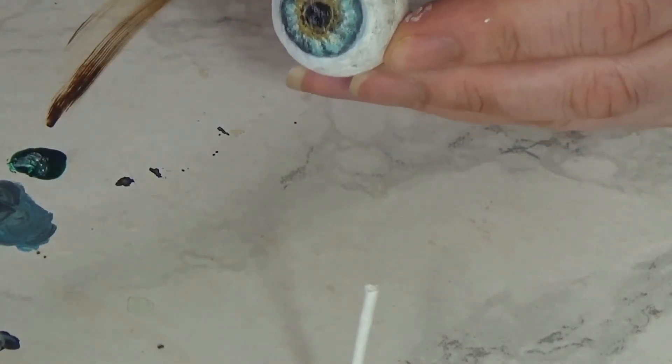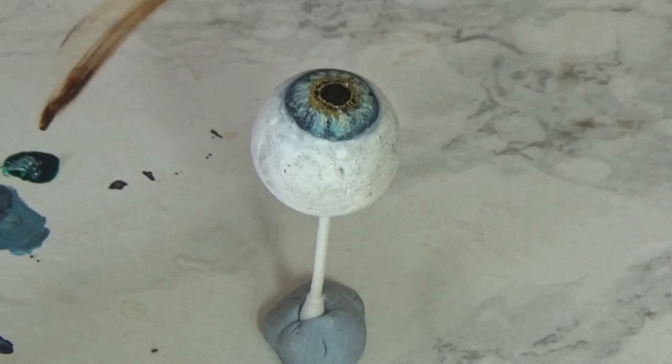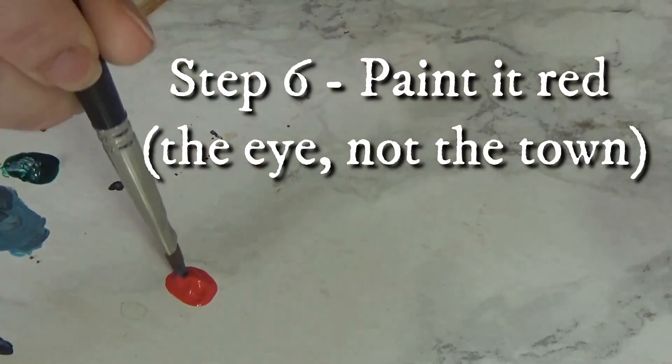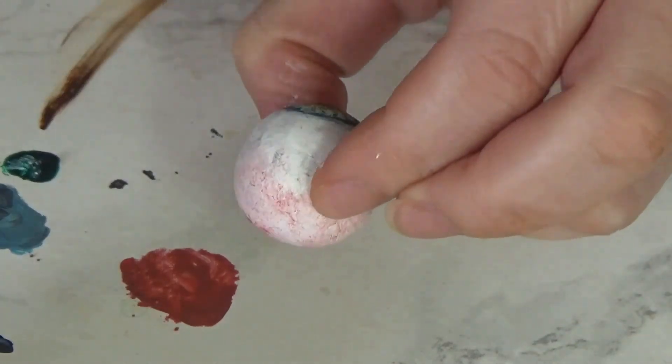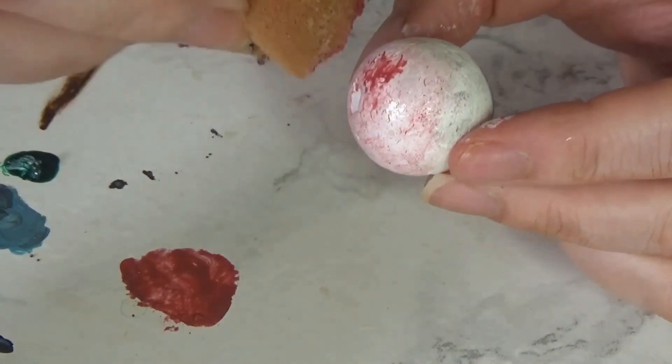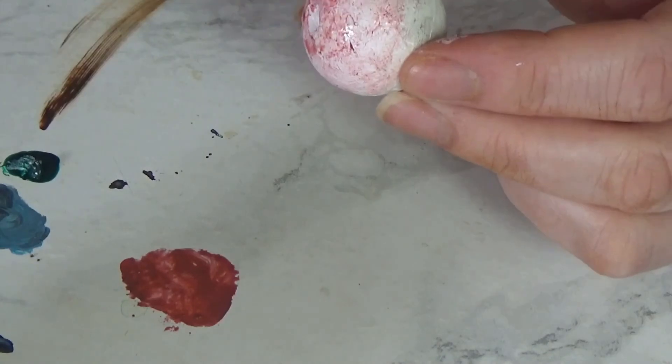Now, just the same as an iris isn't one uniform color, neither is the white of the eye. So you want to stipple some grey over, very watered down grey incidentally, and then you want to stipple over some very watered down red as well, because eyeballs have got a lot of blood vessels in them.